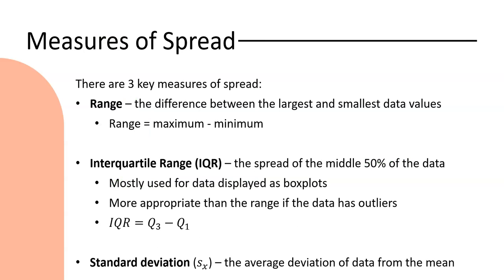Now looking at our measures of spread, again we have three key measures of spread. So the range is the difference between the largest and the smallest data value. So it's how spread out the whole distribution is. We find our range by taking the maximum value and minusing the minimum value.